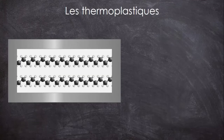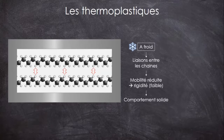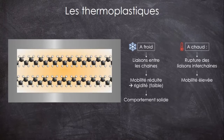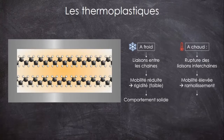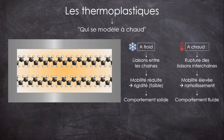La conséquence de la présence de ces liaisons faibles, c'est que si à basse température elles limitent la mobilité des chaînes, ce qui crée finalement une rigidité qui donne un comportement solide au polymère, eh bien en le chauffant au-delà d'une certaine température, la chaleur va permettre de casser ces liaisons. Les chaînes ne sont plus accrochées à leurs voisines et elles peuvent glisser les unes par rapport aux autres, ce qui s'observe par un ramollissement, le matériau perdant sa cohésion et ayant le comportement d'un fluide épais. C'est pour ça qu'on parle de thermoplastique. Lorsqu'ils refroidissent, ils retrouvent leur comportement d'avant la chauffe. Ce comportement est donc dit réversible.